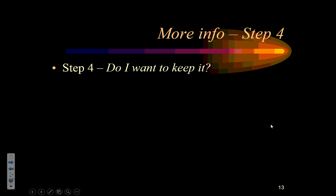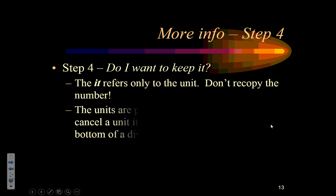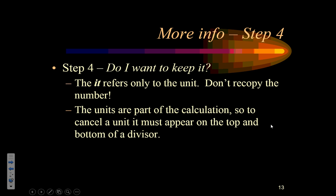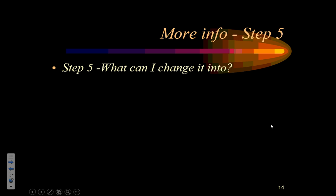So keep in mind with today's homework, you're probably going to be able to do a number of them in your head. And that's the point. We want you to be able to check your work to see, did you get the answer you expected? Now, a couple more things about step four that are important. Remember, do I want to keep it? The it refers to the unit. Don't recopy the number. That's a really common mistake. You don't move down the number, just the unit. And remember, the units are actually a part of your calculation. So always look to cancel units that are on top and bottom so that you can see, are you getting to where you need to go? It's a step that we typically ignore in math, but it's really a valid part of every single calculation.